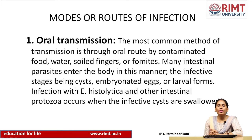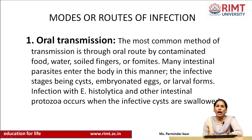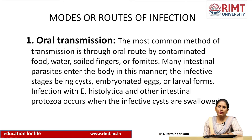The modes of transmission of parasitic infection: oral transmission is the most common method — through contaminated food, water, soiled fingers, or fomites. Many intestinal parasites enter the body this way, the infective stages being cysts, embryonated eggs, or larval forms present near food and water sources. Infection with Entamoeba histolytica and other intestinal protozoa occurs when the infective stages are swallowed.